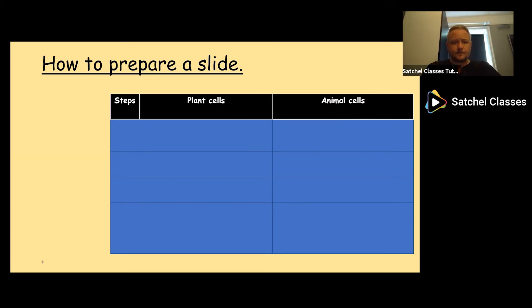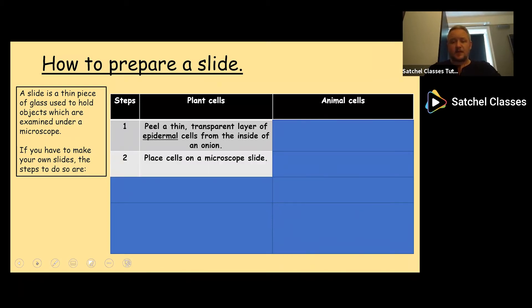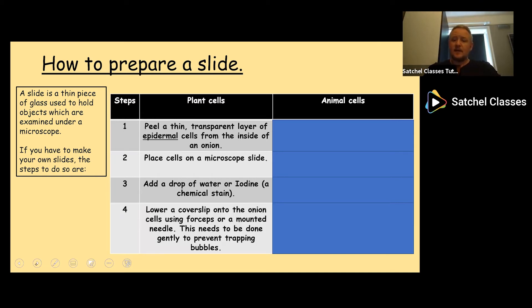So, how to prepare a slide itself? A slide is just a thin piece of glass used to hold objects which are examined under a microscope. If you have to make your own slides, the steps are slightly different depending on whether you use plant or animal cells. You can break them down into four steps. First step: peel a thin transparent layer of epidermal cells from the inside of an onion if we're using plant cells. Place the cells on a microscope slide, taking care to spread the cells out. Onion cells can be quite like sellotape, they kind of bunch up, so when you place them, you gently peel them so they're flat on the surface of the slide. Add a drop of water or, in the case of onion cells, iodine, which is a chemical stain that stains any starch present. Finally, lower a cover slip onto the onion cells using forceps or a mounted needle.